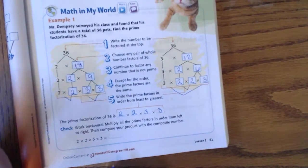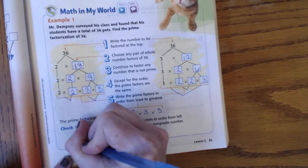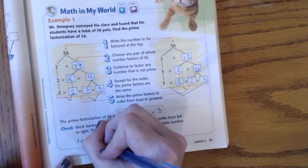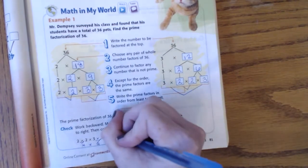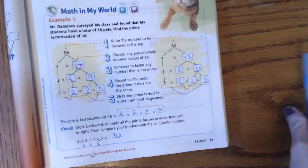So if I were to check my work, 2 times 2 is 4. And 3 times 3 is 9. And what is 4 times 9? 36. You should always end with the number that you started with when you're checking.